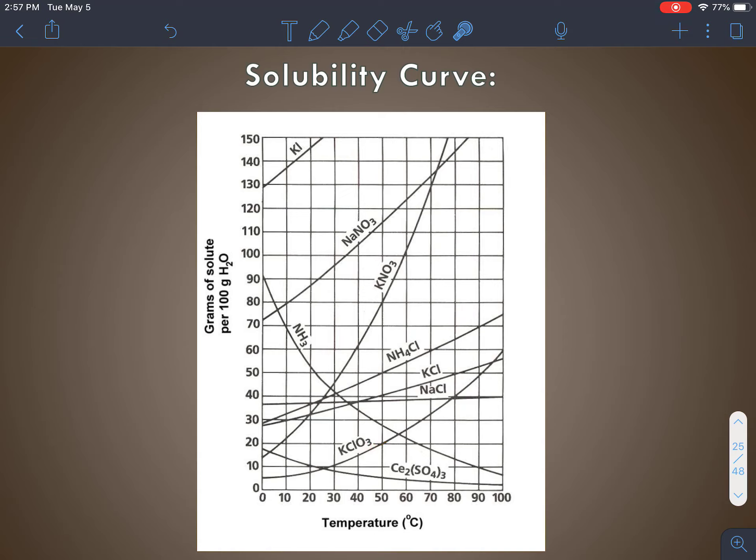Maybe I would say the least soluble at 70 degrees. Now it's Ce2SO43.